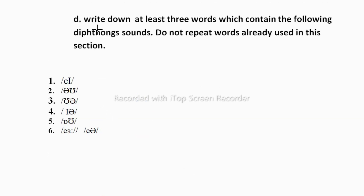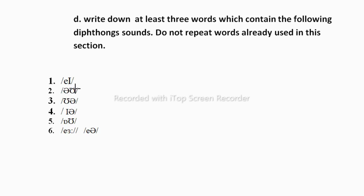Let's see the last exercise D: write down at least three words which contain the following diphthong sounds. Do not repeat words already used in this section. They are asking you to write words related to each diphthong sound, and you cannot use words already discussed in previous exercises. To do this, watch my video on diphthongs — the link is in the description box and also in the I button above. That video will help you understand diphthongs better so you can make many more words on your own. This is all about diphthongs. I hope it was helpful — stay tuned for more videos and thanks for watching.